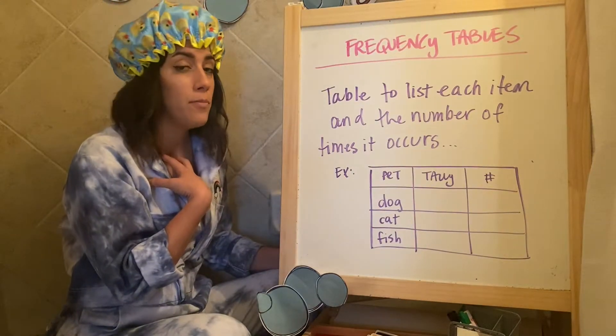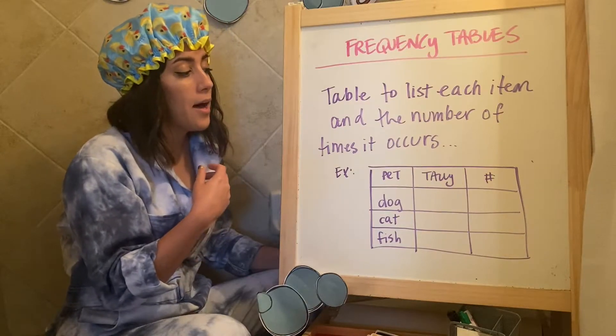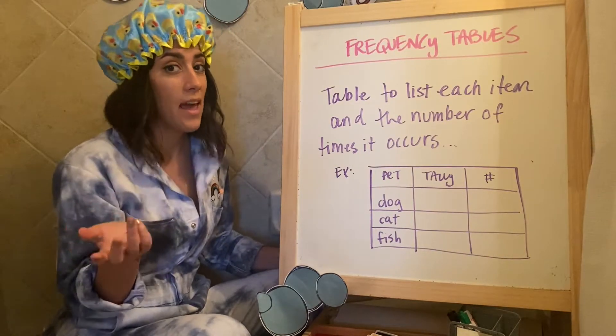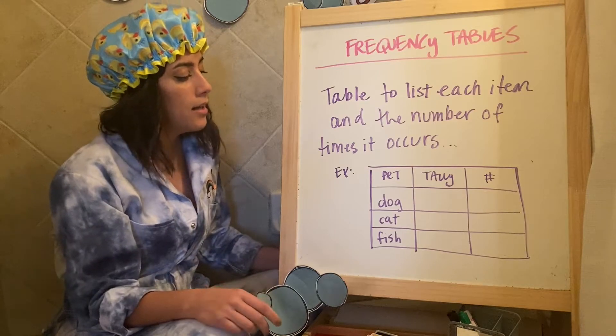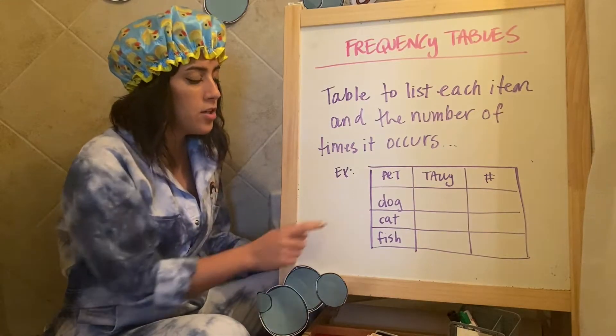For example, if I were to make a frequency table of fourth grade and what pets they have at home, let's say I listed dog, cat, and fish. Those are the pets.